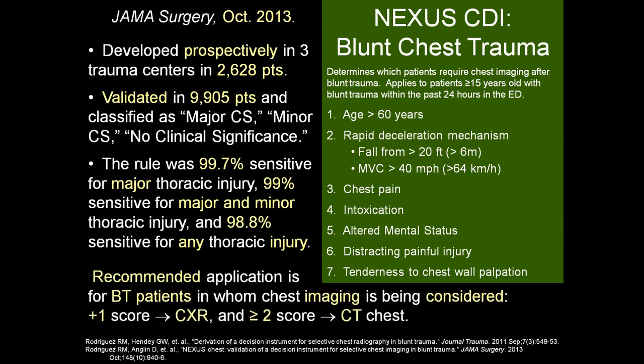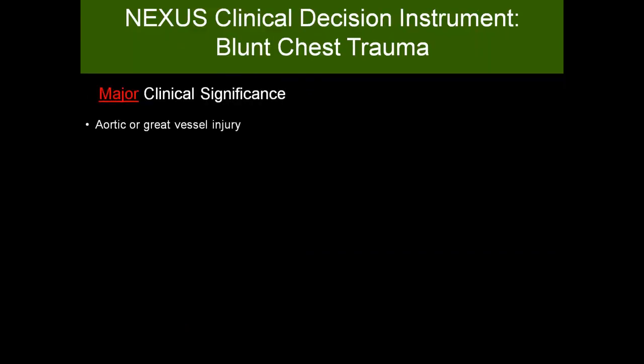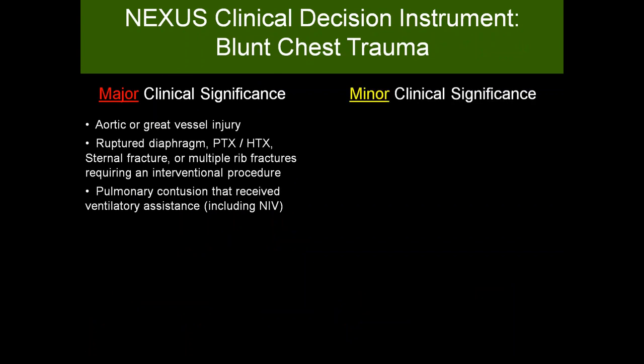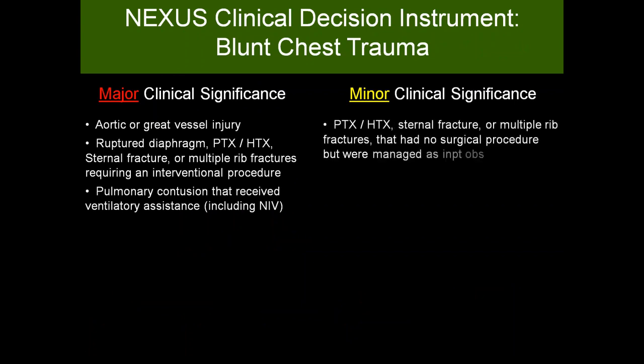The study group recommends: for blunt trauma patients in whom chest imaging is being considered, a score of plus 1 means chest X-ray is probably sufficient; a score of 2 or greater means CT chest is probably indicated. Major clinical significance includes: aorta or great vessel injury, ruptured diaphragm, hemothorax or pneumothorax, sternal fractures or multiple rib fractures requiring an interventional procedure, and pulmonary contusion requiring ventilatory assistance. Minor clinical significance are the same findings but managed as an inpatient observation without surgical procedure.